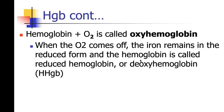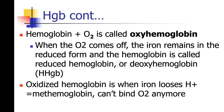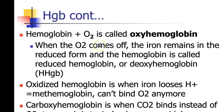Hemoglobin and oxygen together is called oxyhemoglobin. When the oxygen comes off, the iron remains in the reduced form and the hemoglobin is called reduced hemoglobin or deoxyhemoglobin. Oxidized hemoglobin is when iron loses that hydrogen ion — this becomes methemoglobin and it can't bind oxygen anymore. Carboxyhemoglobin is when CO binds instead of O2, and too much of this is toxic — this is what happens with carbon monoxide poisoning.